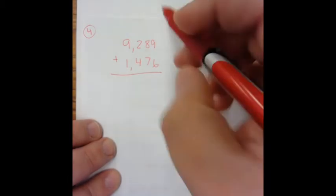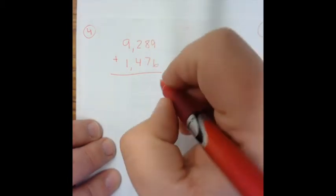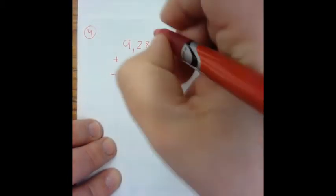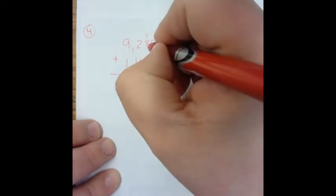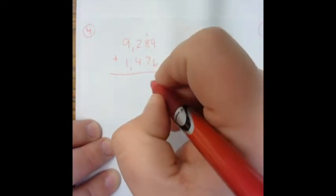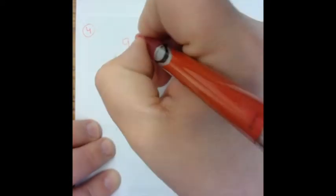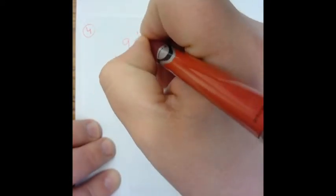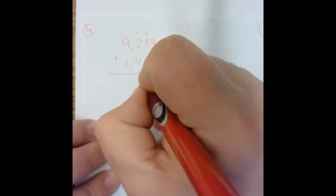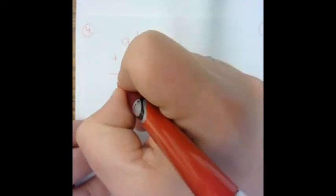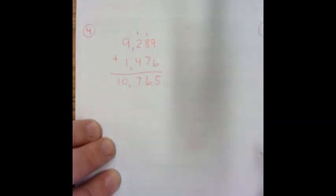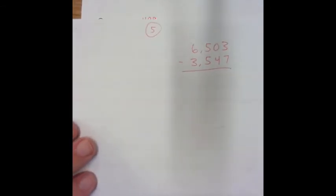So 9 plus 6 is 15, carry the 1. 8 plus 1 plus 7 is 16, carry the 1. 4 plus 2 plus 1 is 7. 9 plus 1 is 10. So our answer is 10,765. So go ahead and put that here: 10,765. All right, let's do number 5. So we are subtracting.